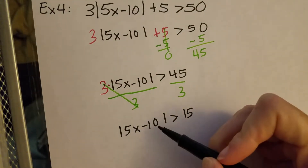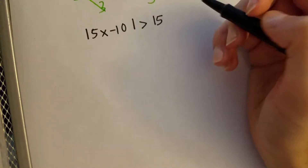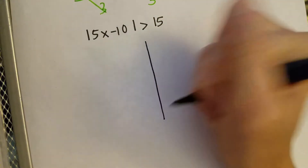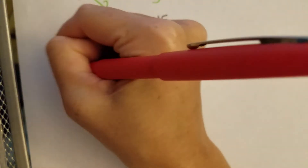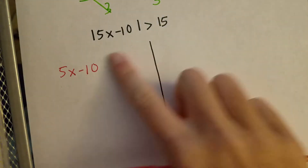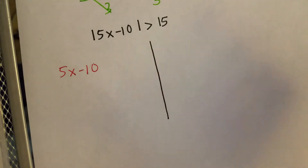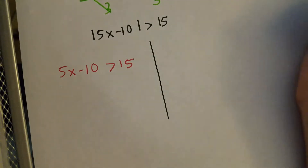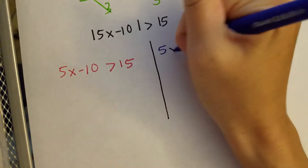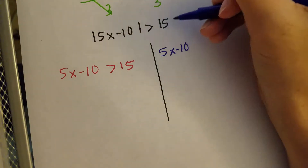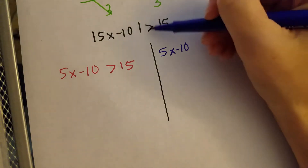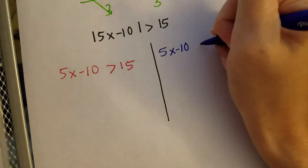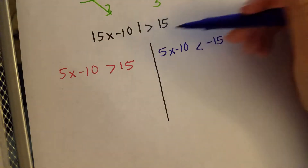Now my absolute value bars are by themselves. Since they are isolated, we split this into two separate problems — I draw a line down the middle. On the first side, we drop the absolute value bars and write everything as it already appears: 5x − 10 is greater than 15. On the other side, we drop the absolute value bar and write 5x − 10, but we change the right side to the opposite sign — since it's positive 15, it becomes negative 15. Since we're multiplying the inequality by a negative, the inequality symbol flips direction.